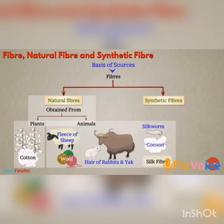What do you mean by natural fibers? The fibers which are obtained from plants and animals directly are known as natural fibers. Examples for plant fibers are cotton, jute, flax, hemp, etc. Animal fibers are wool and silk.